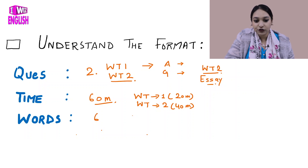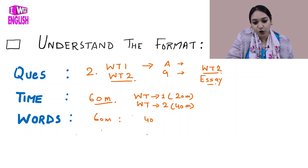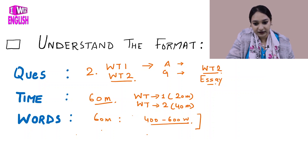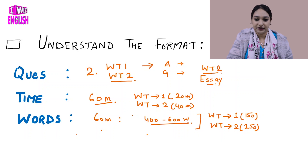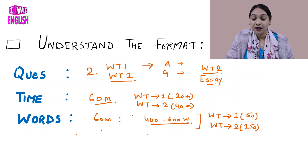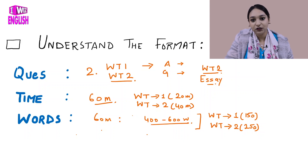Now let's talk about words. In 60 minutes, it is usually expected that students will write around 400 to 600 words in total. For Writing Task 1, you are expected to write at least 150 words. For Writing Task 2, you are expected to write at least 250 words.